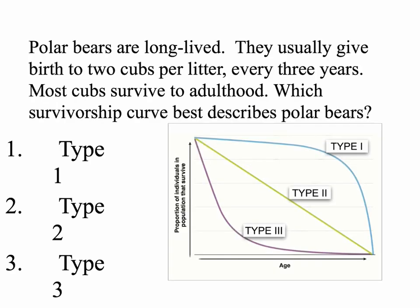Here's a practice problem. Polar bears are long-lived. They usually give birth to two cubs per litter every three years, and most cubs survive to adulthood. Which survivorship curve best describes polar bears? The correct answer is a Type 1 curve — polar bears have a high survival rate until old age, when they drastically drop off. This lesson has investigated life history strategies and trade-offs in different organisms.